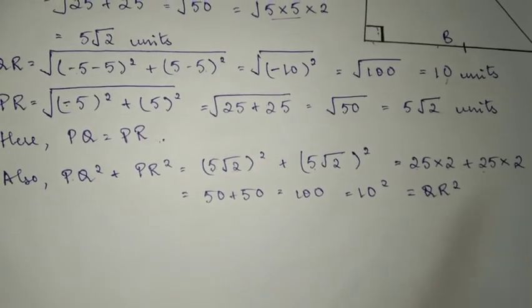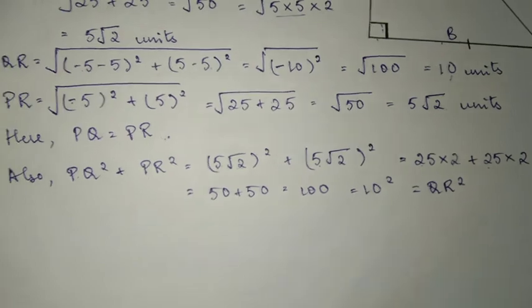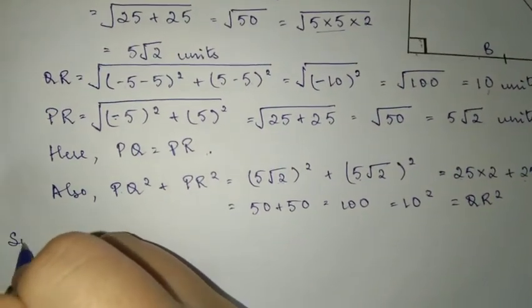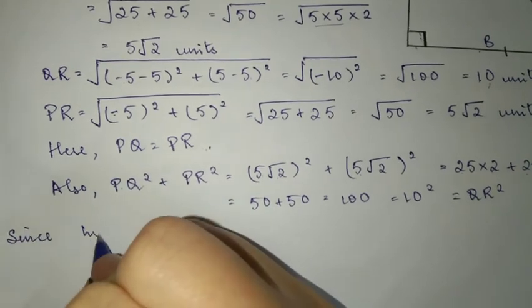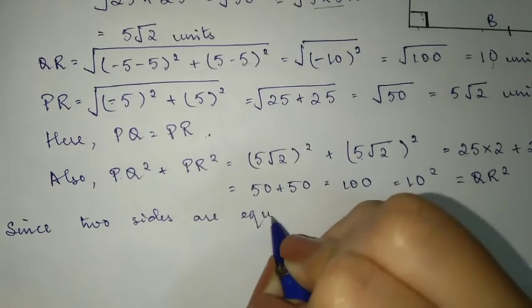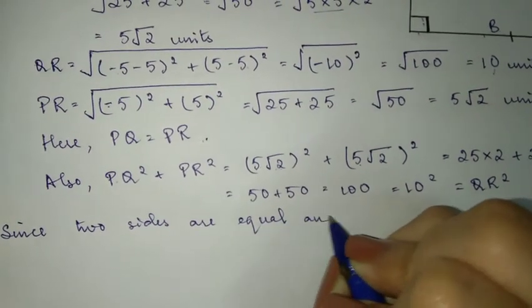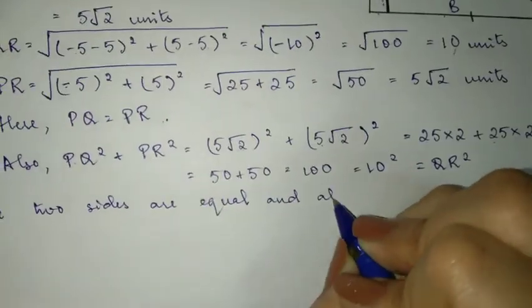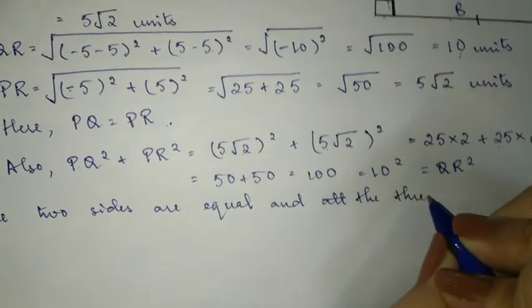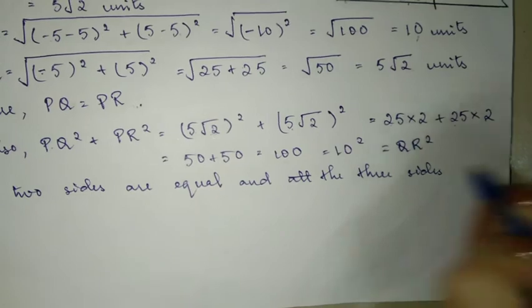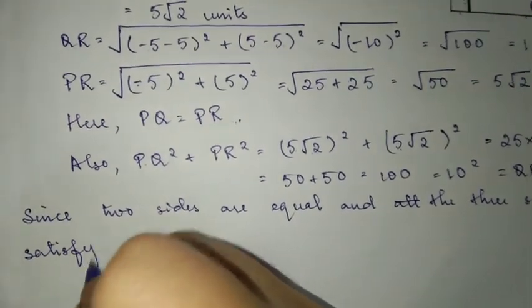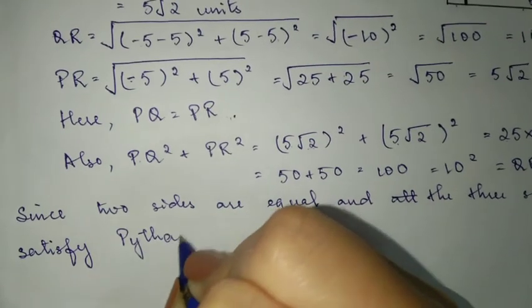So PQ square plus PR square equals QR square, which satisfies Pythagoras theorem. Since two sides are equal and the three sides satisfy Pythagoras theorem...